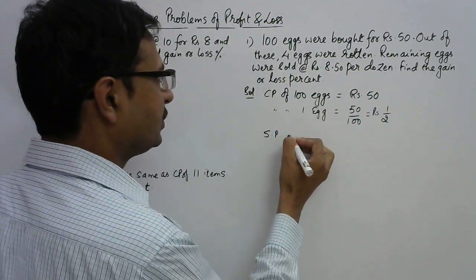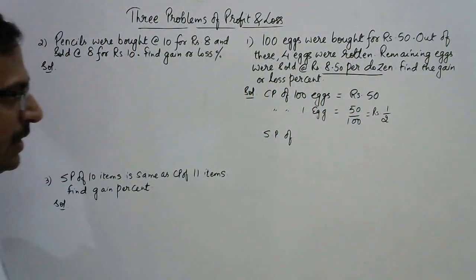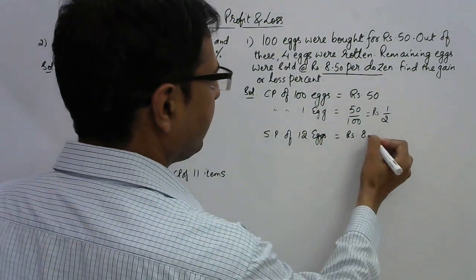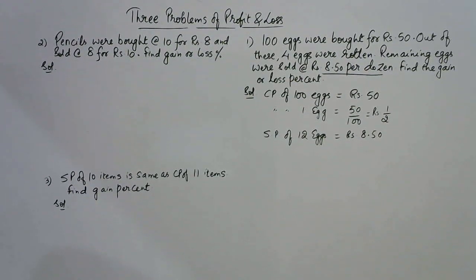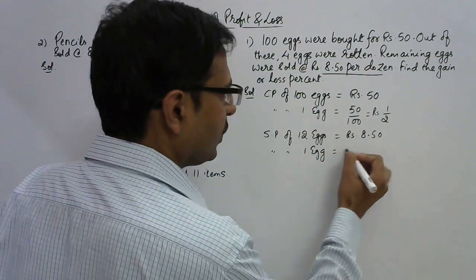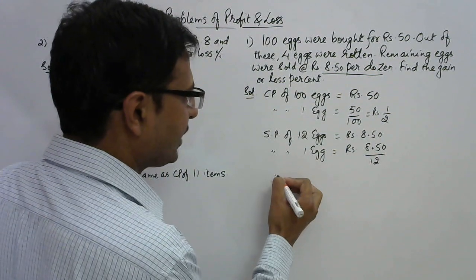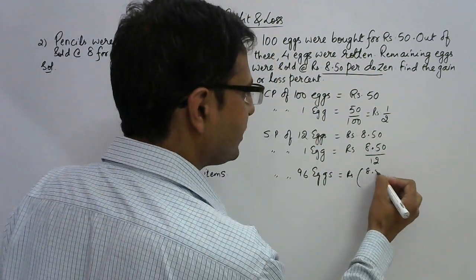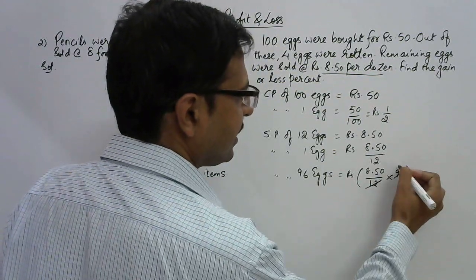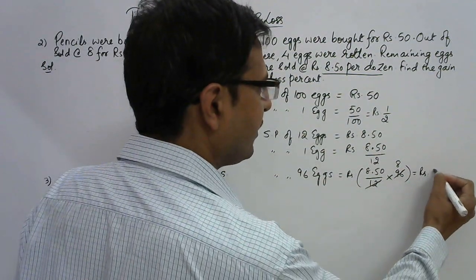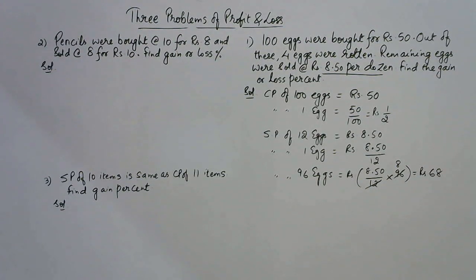Since four eggs were found rotten, they cannot be sold, so remaining eggs are 100 minus 4, that is 96. The selling price of 12 eggs is rupees 8.50, so the selling price of 1 egg is 8.50 upon 12. The selling price of 96 eggs is 8.50 upon 12 multiplied by 96, which is exactly 8 times. So 8 times 8.50 is 64 plus 4, giving us rupees 68.